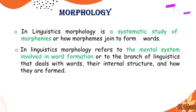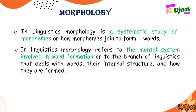In linguistics, morphology refers to the mental system involved in word formation — how our mind forms words, or how words are being formed in one's mind. It is also the branch of linguistics that deals with words, their internal structure, and how they are formed. This includes the structures of language, such as subject, verb, and object, and how particular words within those structures are made up.